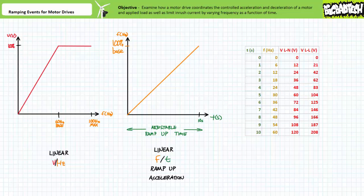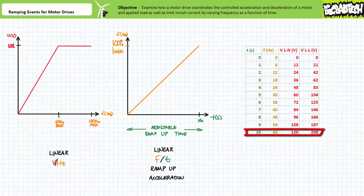Consider a motor drive with a simple linear volts per hertz profile and another plot of frequency as a function of time, where excitation frequency is ramped from zero to the base frequency over an adjustable acceleration ramp-up time of, let's say, 10 seconds. Assuming a 60 hertz base frequency, this means while excitation frequency is ramped from zero to 60 hertz over 10 seconds, voltage is also ramped from zero to 100% over the same 10-second period. At five seconds into the ramp-up event, excitation frequency would be 30 hertz and applied voltage would be 50%. When the ramp-up event finishes at 10 seconds, excitation frequency flatlines at 60 hertz, as does applied voltage at 100%.